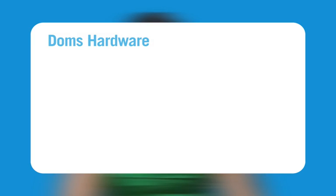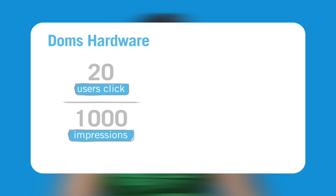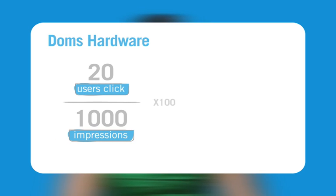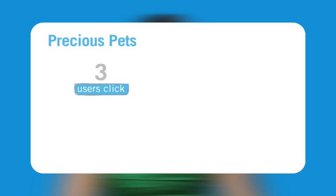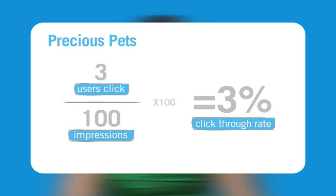Google encourages AdWords advertisers to create relevant ads and keywords and rewards those with high relevance. In this example, you can see that Dom's Hardware has received a total of 20 clicks on a particular AdWords ad. This ad has appeared one thousand times and so has received one thousand impressions. The calculation shows that the advertiser has a resulting CTR of two percent. In this example, Precious Pets has received three clicks out of 100 impressions, resulting in a CTR of three percent. Remember that these are only examples and click-through rates vary significantly depending on the industry, the keyword, and the advertiser's goals.